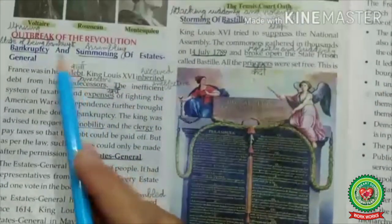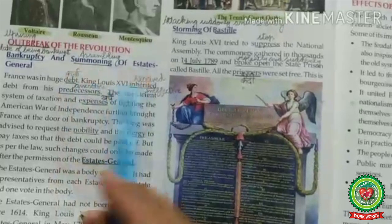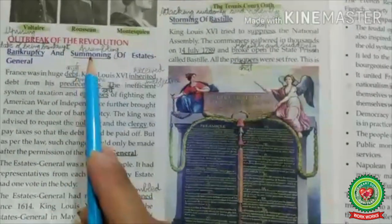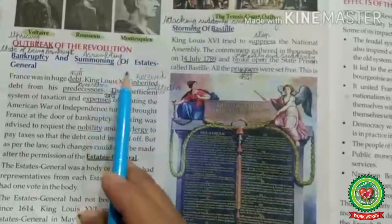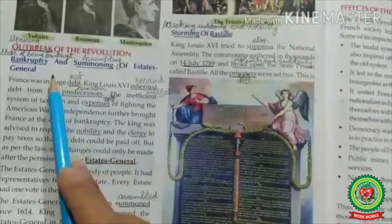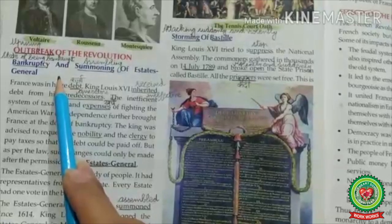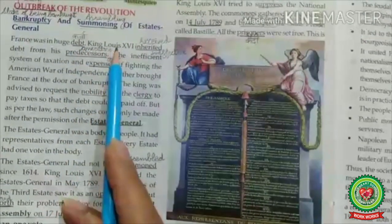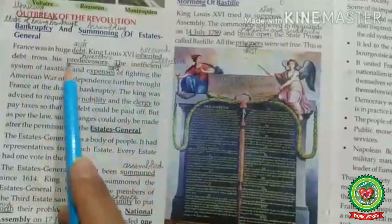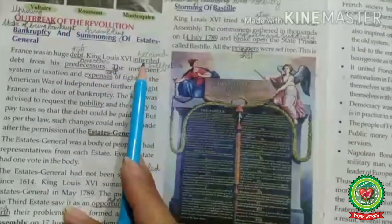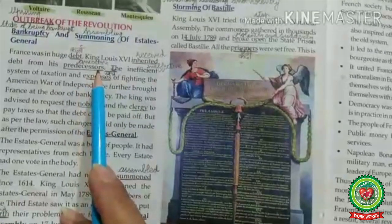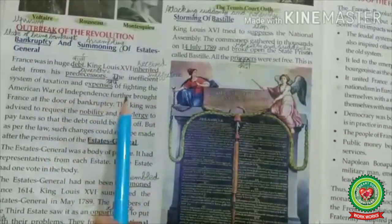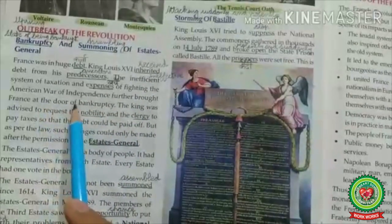Page number 30: Bankruptcy and Summoning of the Estates General. Bankruptcy means the state of being bankrupt, or financial ruin. Summoning means assembling. Estates General means a general assembly representing the French estates of France. France was in huge debt. King Louis XVI inherited debt from his predecessors — inherited means received, and predecessors means ancestors. The inefficient system of taxation and expenses of fighting the American War of Independence further brought France to the door of bankruptcy.